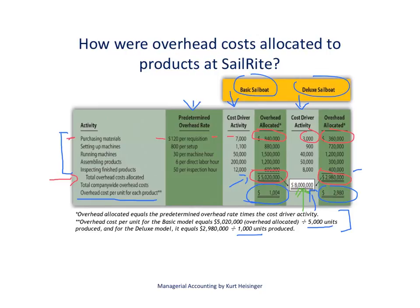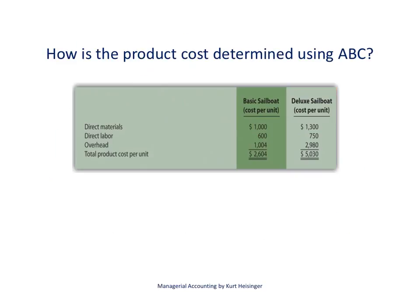Now that we have overhead cost per unit, we move to the next slide to calculate the total product cost per unit. Adding direct materials, direct labor, and overhead costs, we get a total product cost of $2,604 per unit for the basic sailboat and $5,030 per unit for the deluxe sailboat. In the part two video, we will look at how best to use this information.